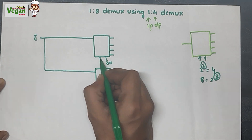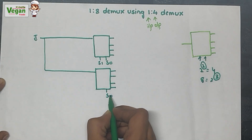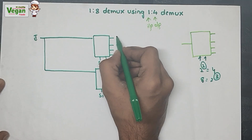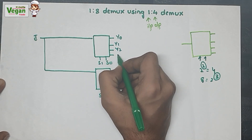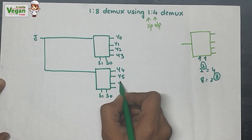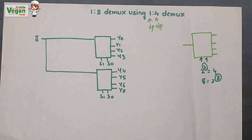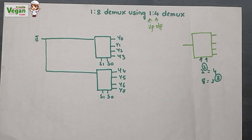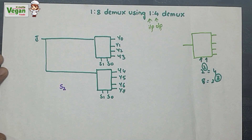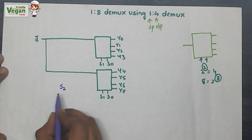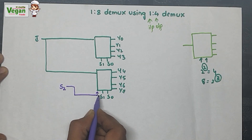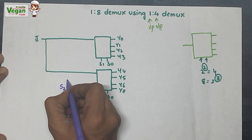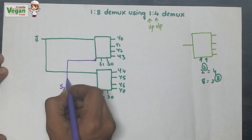Let the two select lines for each 1-to-4 demux be S0 and S1. The outputs are named Y0, Y1, Y2, Y3, Y4, Y5, Y6, and Y7. To construct the 1-to-8 demux we need three select lines, but each 1-to-4 demux only has two. To add the third select line, we will use an external select line S2.